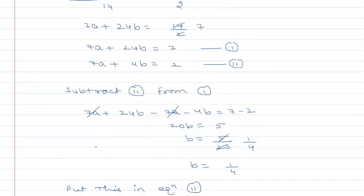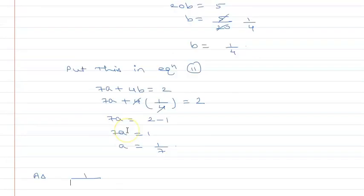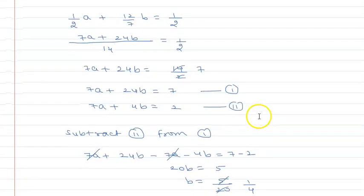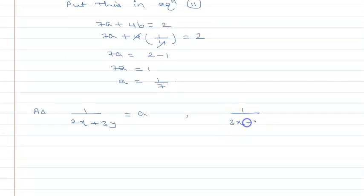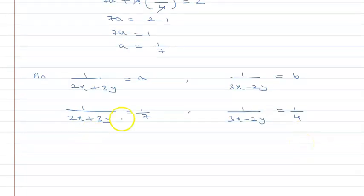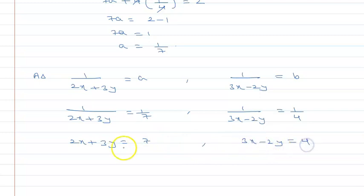Now recalling our substitution: 1 upon (2x + 3y) = a = 1 upon 7, which gives 2x + 3y = 7 — call this equation 3. And 1 upon (3x − 2y) = b = 1 upon 4, which gives 3x − 2y = 4 — call this equation 4.